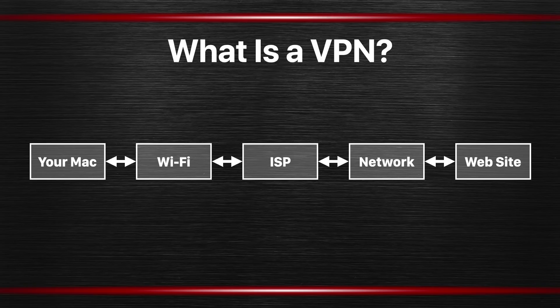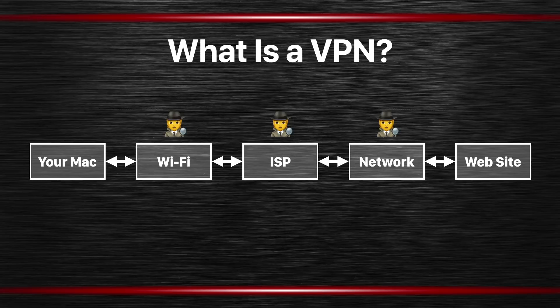There are three parts of that chain that are really out of your control. Let's assume you trust the website — maybe it's your bank or a shopping site — and that you trust your Mac. But those three spots in between could be places where you could be spied on and your data intercepted. If it's your own WiFi network you're probably not concerned, but it could be the WiFi at a coffee shop, conference center, hotel, school, or some other place.